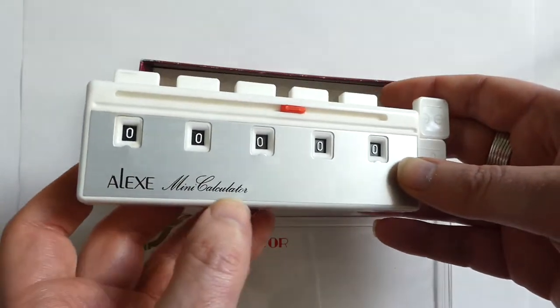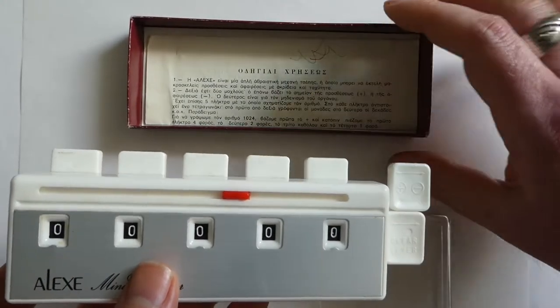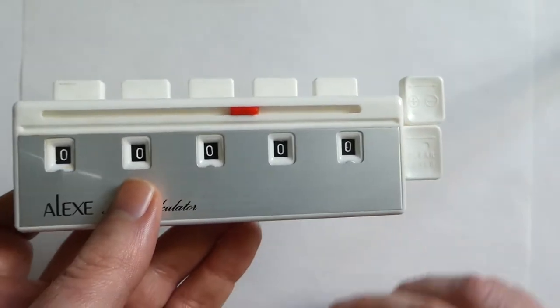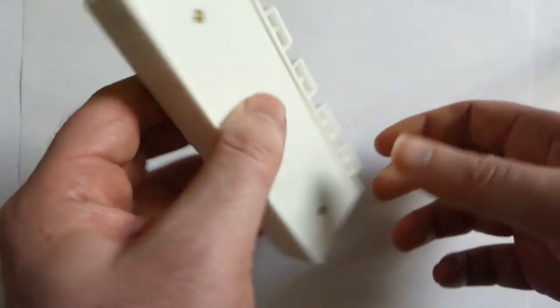This is the Alexa Mini Calculator. It happens to have Greek instructions because that's where this one was bought, but it was made in Japan in around 1965.